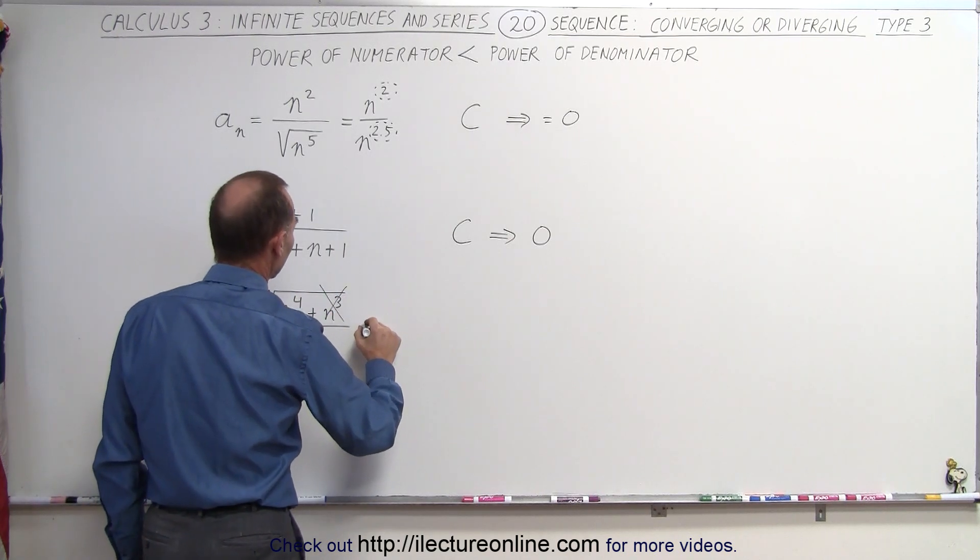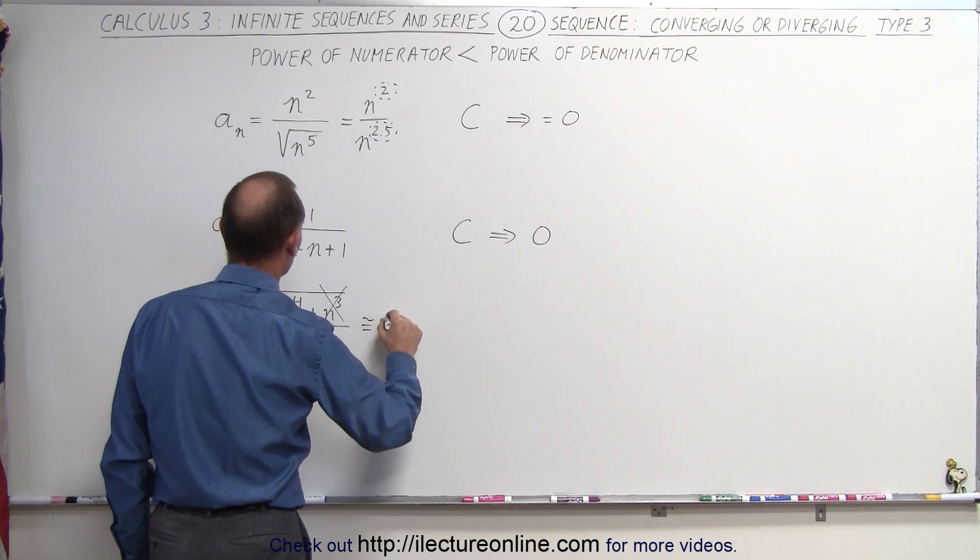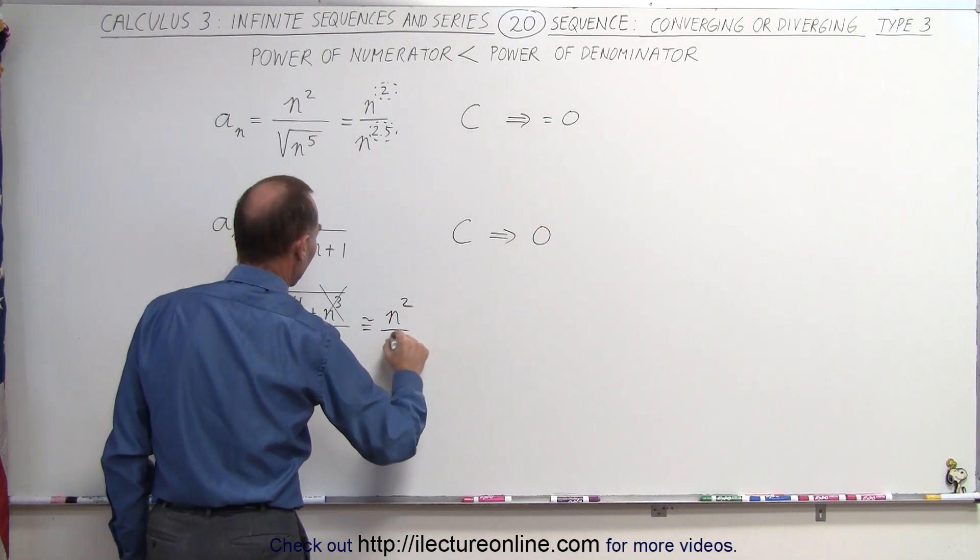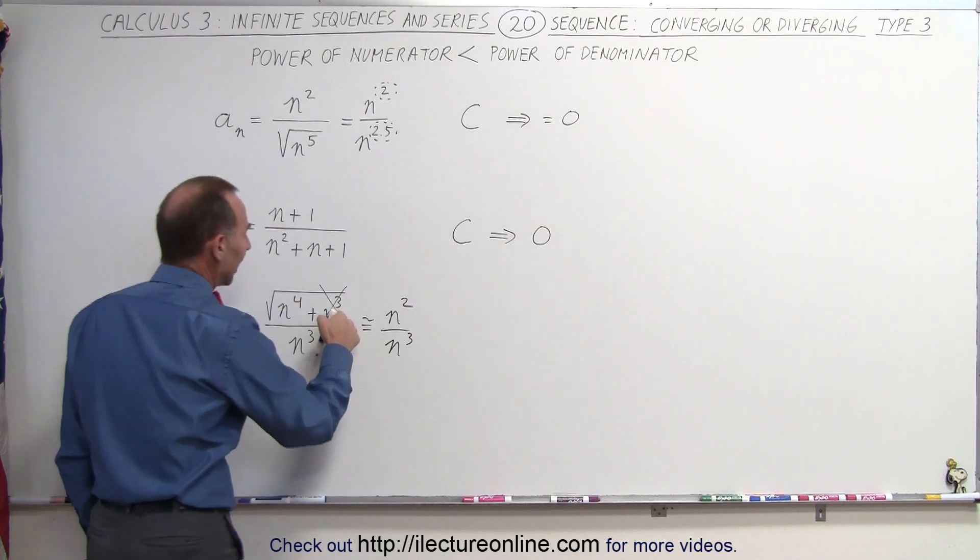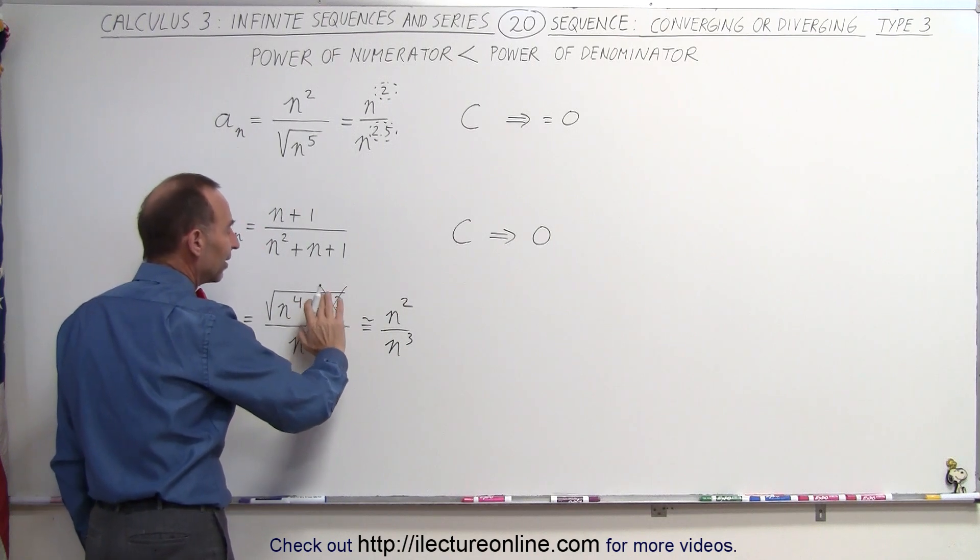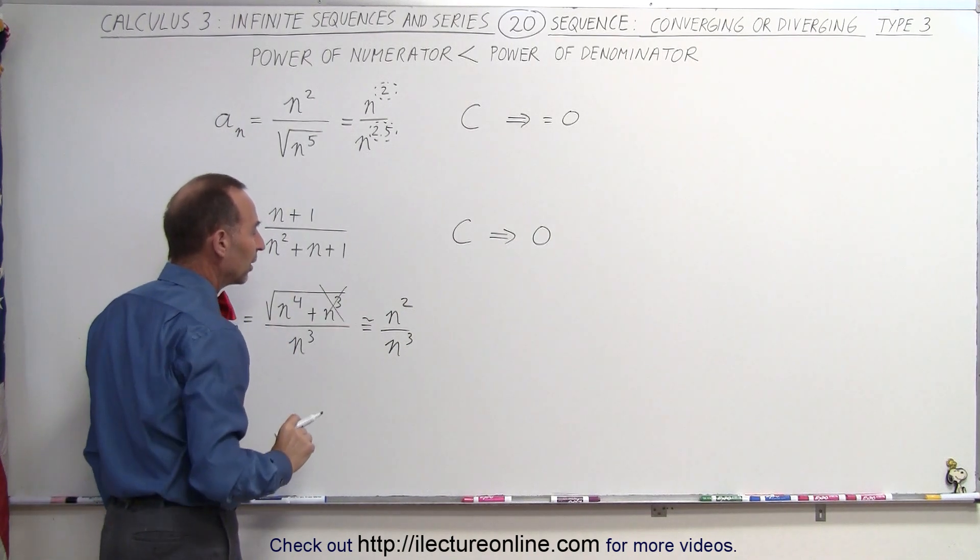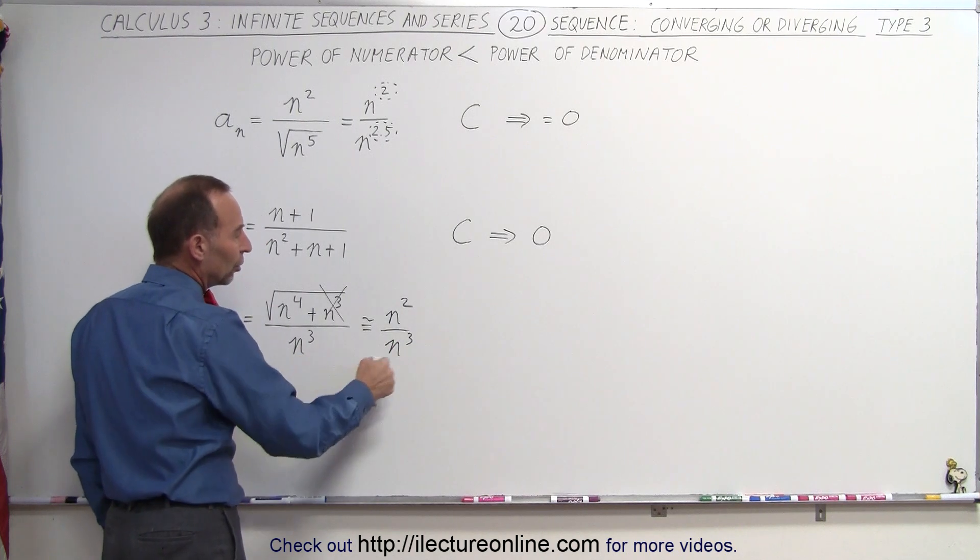we realize that we have a ratio approximately equal to n squared divided by n cubed. The n cubed in the numerator will become less and less significant, since we take the square root of that. And so it really comes down to this ratio.